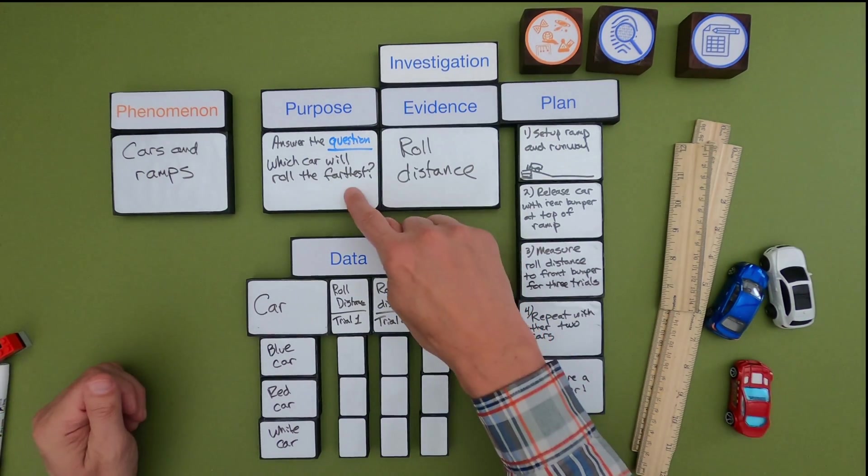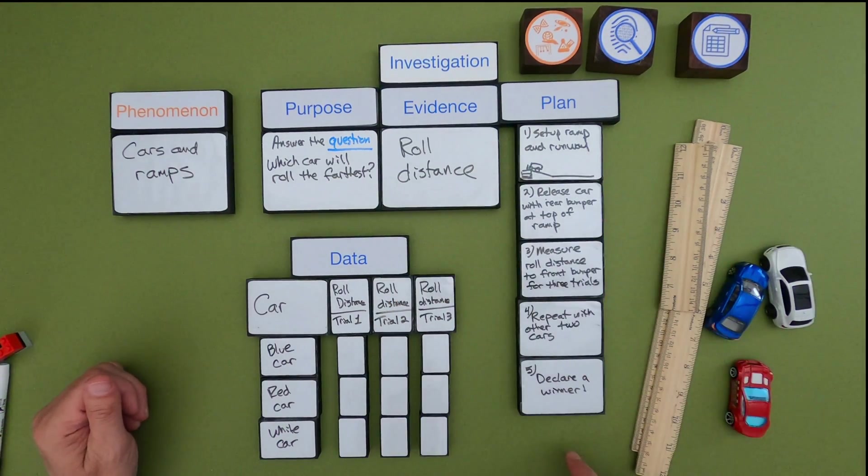So now we've done an investigation we've got a good purpose, evidence, and plan. An empty data table and somebody could just come and follow this. But I'm sure what you want to know is which of the cars will roll the farthest. And so I'm going to take a second and collect a little bit of data.